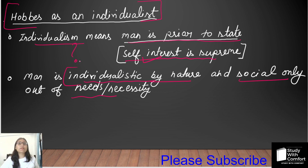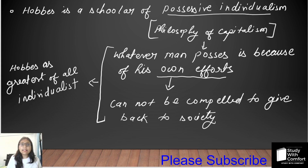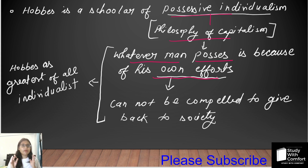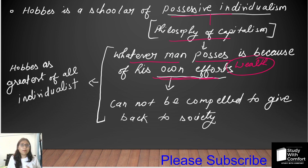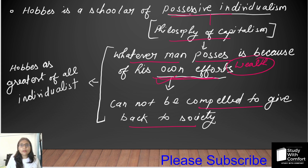Hobbes is considered a scholar of positive individualism. Positive individualism is a philosophy of capitalism. Whatever a man possesses is because of his own efforts. An individual who is generating wealth and making economic conditions does so through his own efforts, capacities, abilities, and hard work. In this way, when he is making his own efforts, we cannot compel a man to give it back. Individuals cannot be compelled to give back — this is called positive individualism.